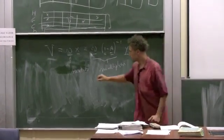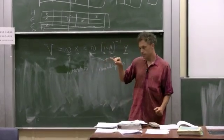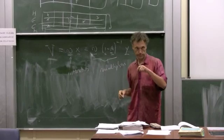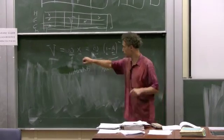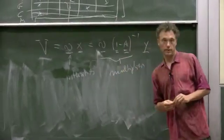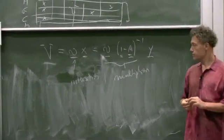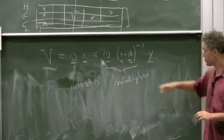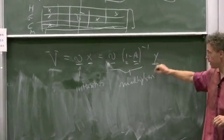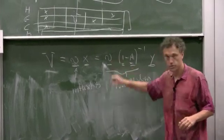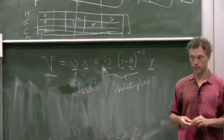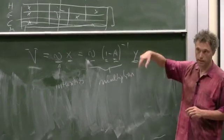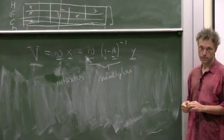Or in other words, whilst the intensity gives you the value added in that one industry that has gross output x, this multiplier gives you the value added that is a consequence of the final demand from that industry. But the value added in that industry and all other industries in the economy that are affected ultimately by that final demand in that one industry.